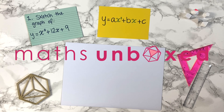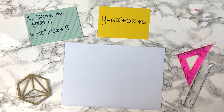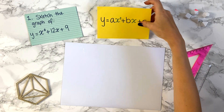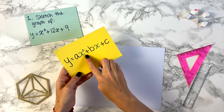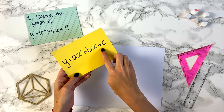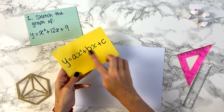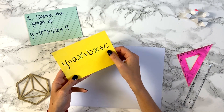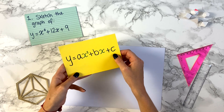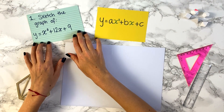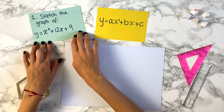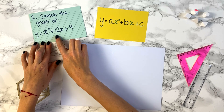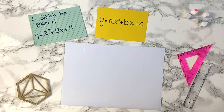Let's have a look at how to sketch quadratic graphs by completing the square. A quadratic graph is of the form y equals ax squared plus bx plus c, where a, b, and c stand for numbers. Let's have a go at question one: sketch the graph of y equals x squared plus 12x plus 9.